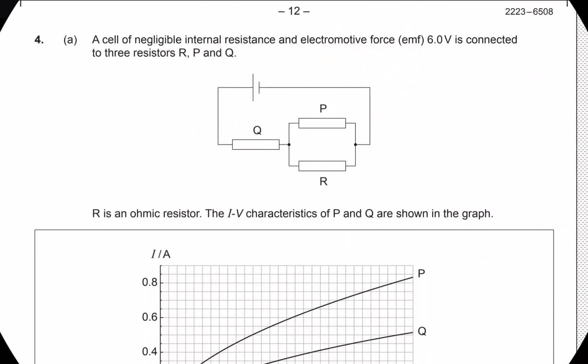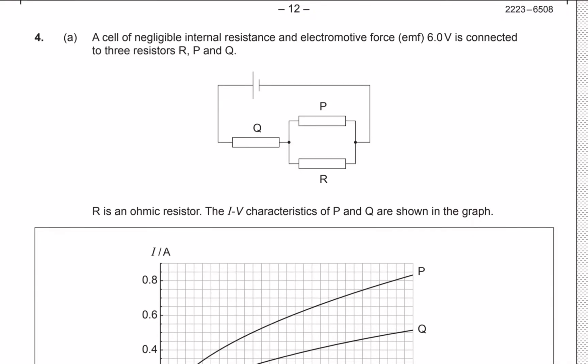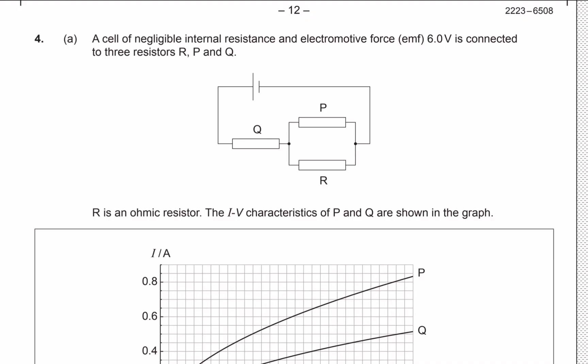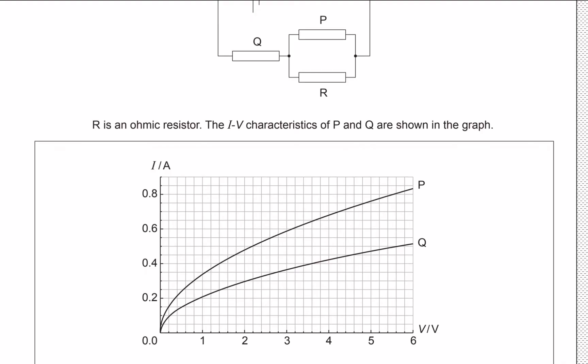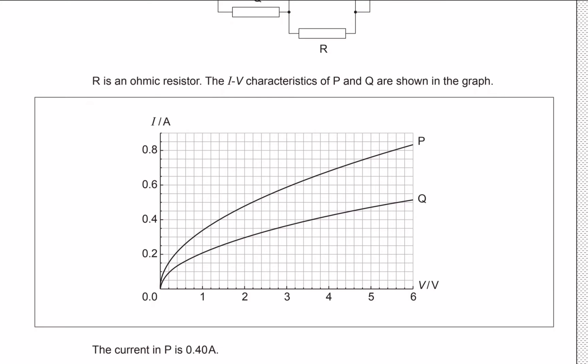Hello guys, welcome to this new video. This is question 4 in the May 2023 timezone 1 paper 2. We're given a circuit where the cell has negligible internal resistance, an EMF of 6 volts, connected to three resistors. R is an ohmic resistor, while P and Q are not — their properties are shown on the graph.